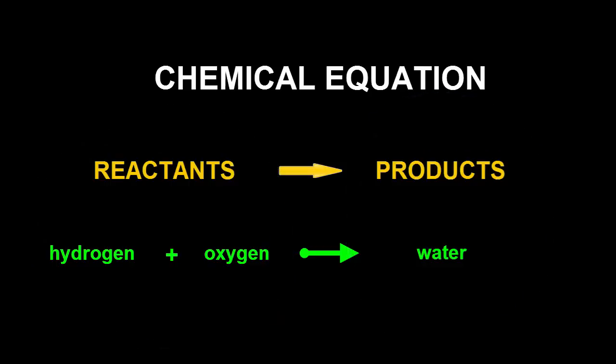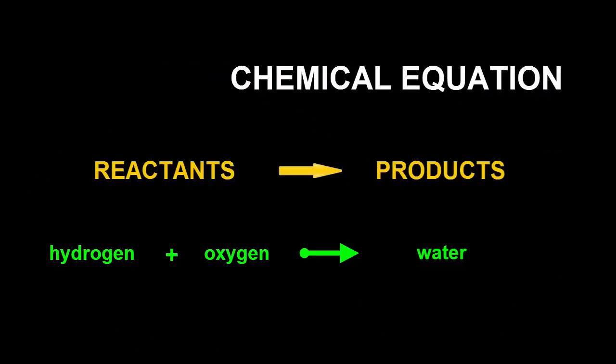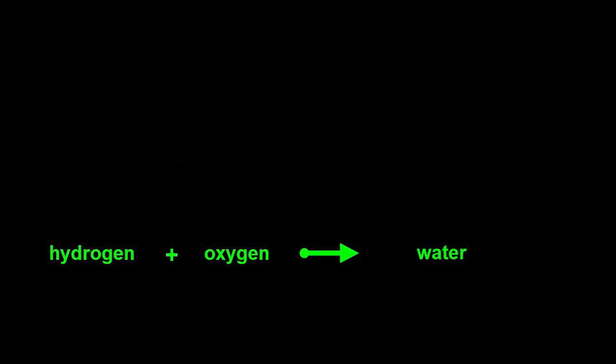When the numbers of atoms of all types are equal on both sides, we say that the equation is balanced. Here's how you balance a chemical equation.